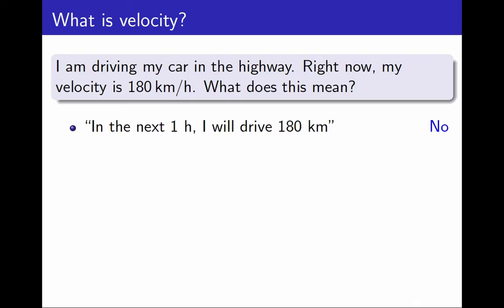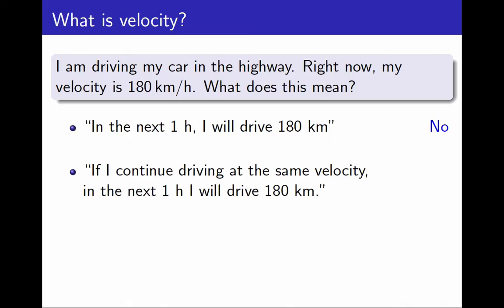Instead, perhaps I could say that, if I continue driving at the same velocity, in the next hour I will drive 180 km. Yes, this could be true, but it is cheating! I cannot use the word velocity to explain what velocity means. If I already know what continue driving at the same velocity means, then there is little to explain.